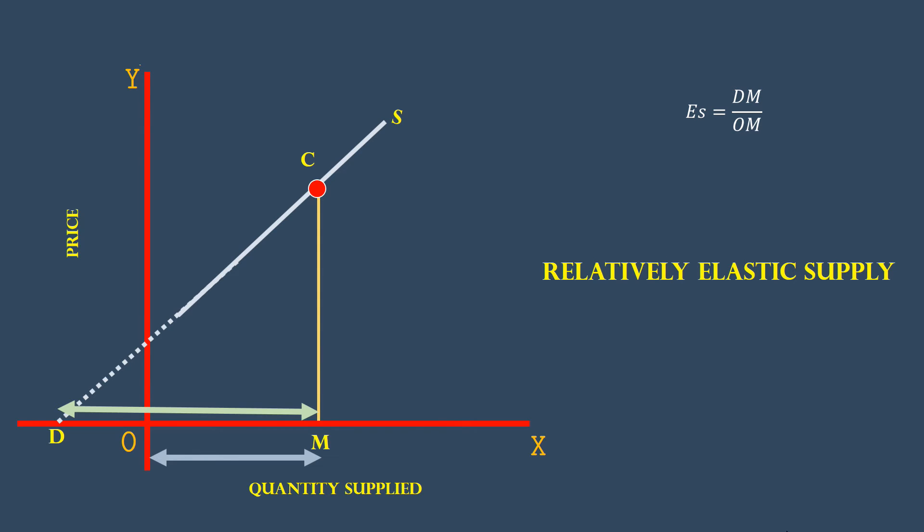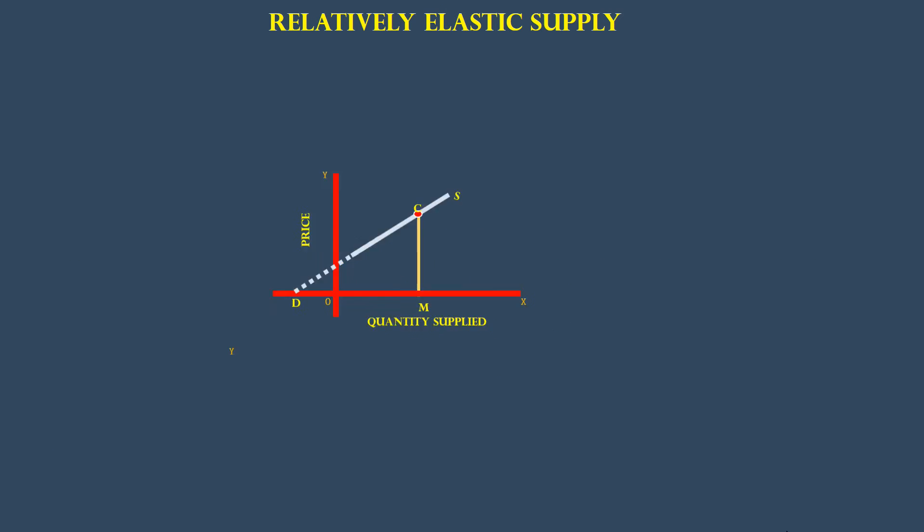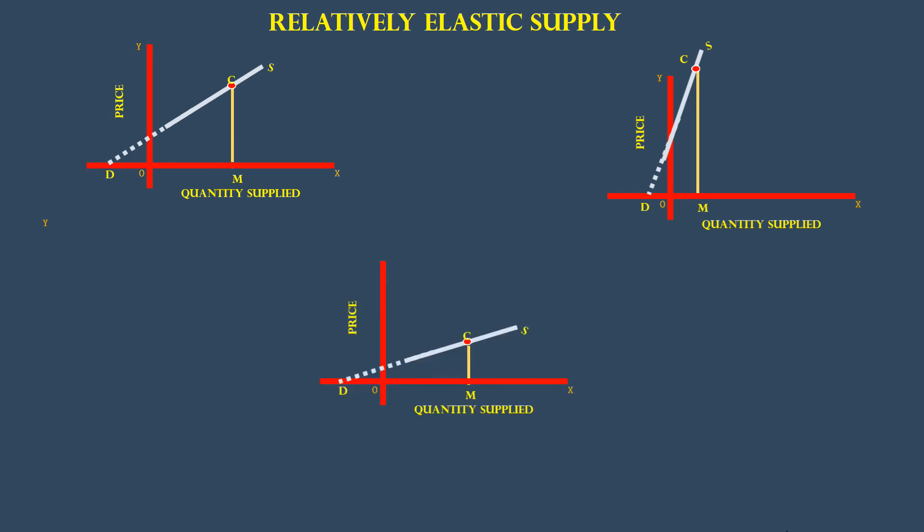Again, understand the slope of the supply curve has nothing to do with the elasticity of supply. See these supply curves. They have different slopes. All exemplify relatively elastic supply curve because DM is greater than OM.